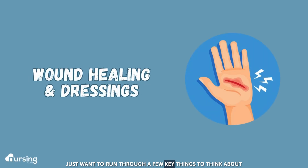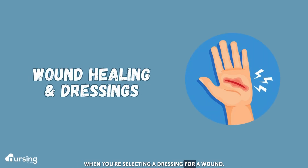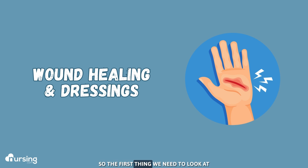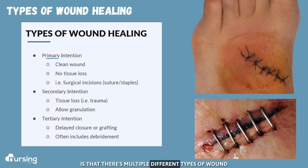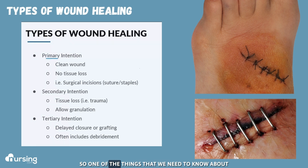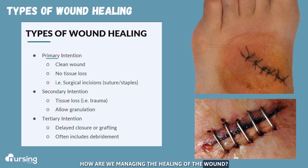I just want to run through a few key things to think about when you're selecting a dressing for a wound. The first thing we need to look at is that there are multiple different types of wound healing and wound closures. One of the things we need to know about our wound is how are we managing the healing of the wound?